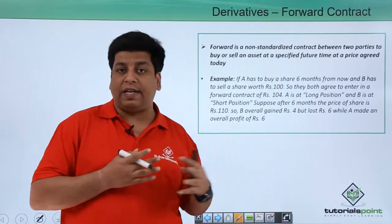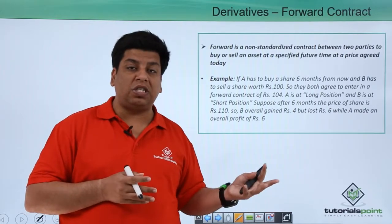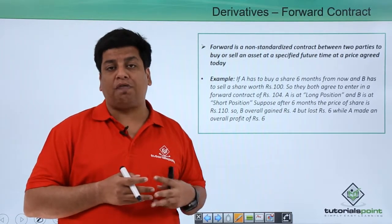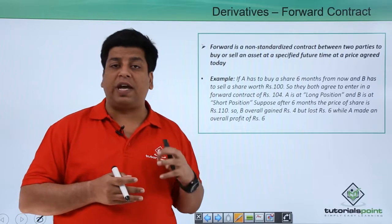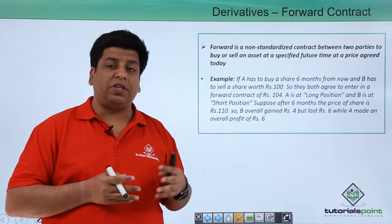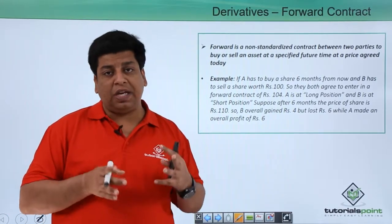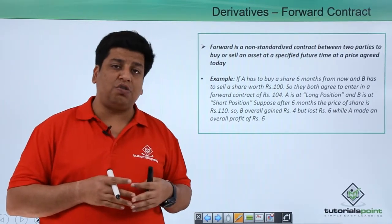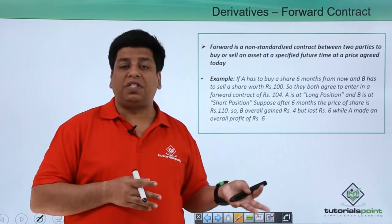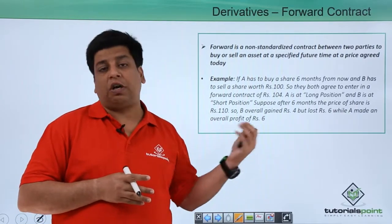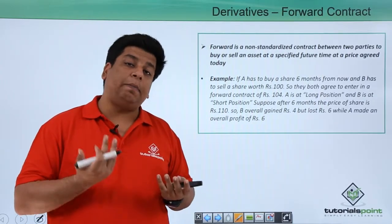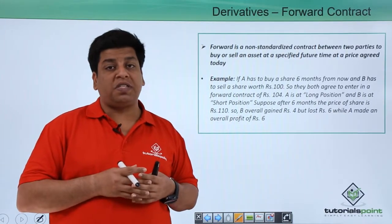However, there is an opportunity loss for B, who could have earned ₹10 profit instead of ₹4 by selling directly to the market rather than to A. But B did hedge its risk when entering the contract, because you never know what the price will be after six months. So while there is an opportunity loss, overall both A and B are profitable by entering into this contract.